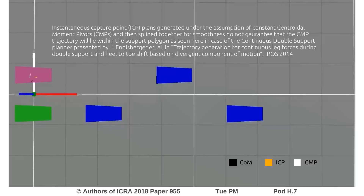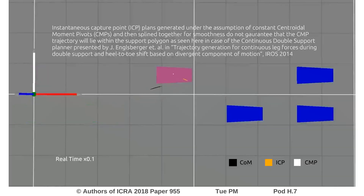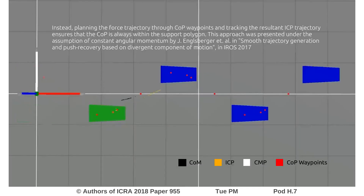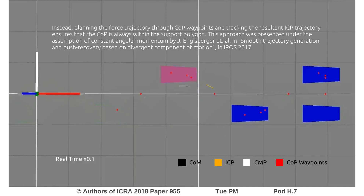Methods to compute ICP plans under the assumption of constant COPs and negligible angular momentum do not guarantee that the resulting COP remains within the support polygon. Using COP waypoint placement to encode a force trajectory and tracking the resulting ICP can ensure that the COP remains within the support polygon.